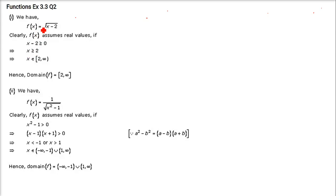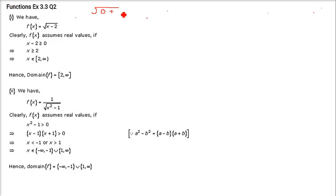The next question is to find the domain. Whenever there is anything with a root, we first have to see whether it is in the numerator or the denominator. If it is in the numerator, you can have a 0 and you can have a positive value, but you cannot have a negative value. That means anything greater than or equal to 0 is acceptable.